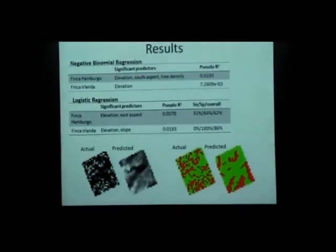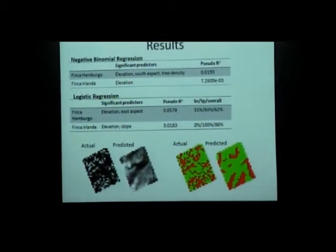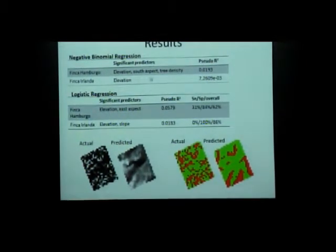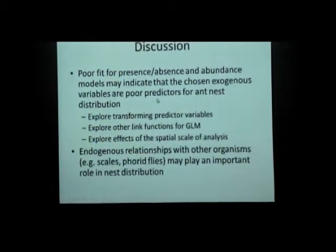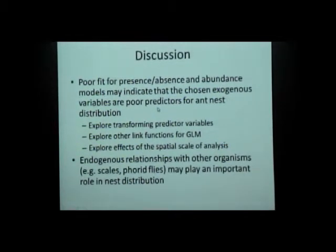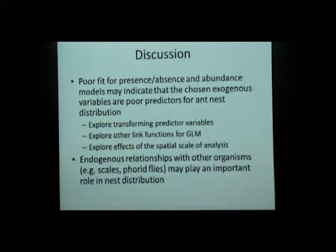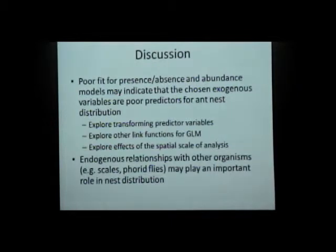It should be noted that it predicted no ants in Finca Yolanda, so it would obviously have predicted all the absences correctly. So what do these preliminary results mean? The poor fit of both models could indicate that the exogenous factors I chose to study are not good predictors of where ants are distributed.